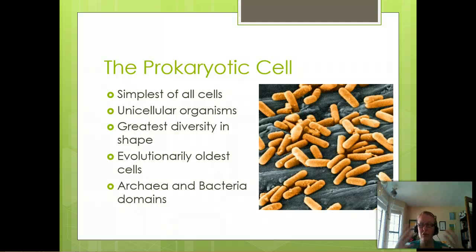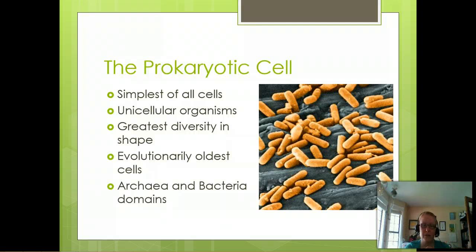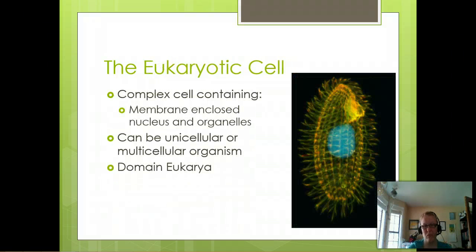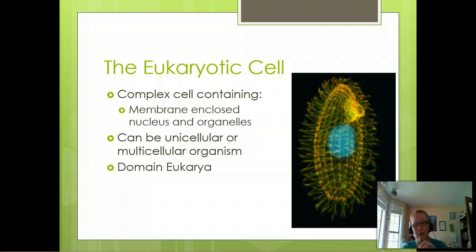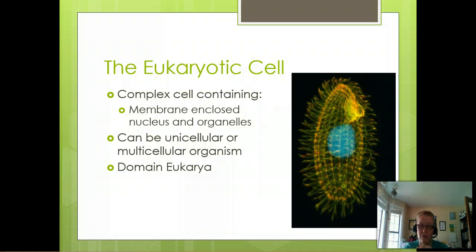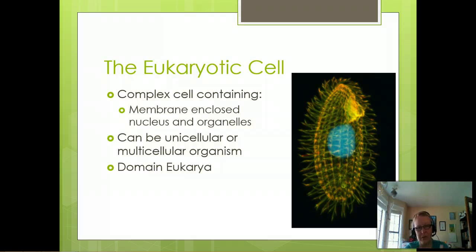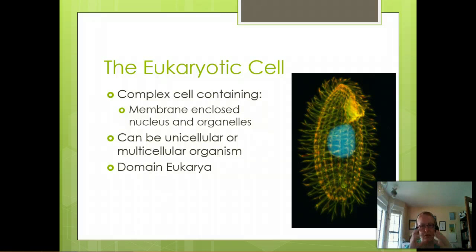Prokaryotes have huge diversity in shape and size. They are the oldest of all the cells — in fact, we believe they are closer to our evolutionary ancestor than we are. The eukaryotic cell is a much more complex cell. We have multiple organelles and a nucleus within the cell. Eukaryotic cells include unicellular eukaryotes as well, so don't forget about them. All eukaryotic cells belong in the domain Eukarya.